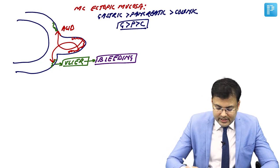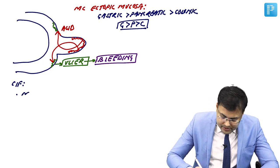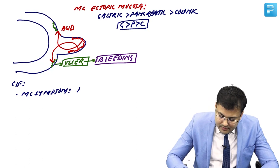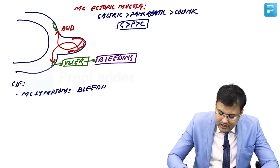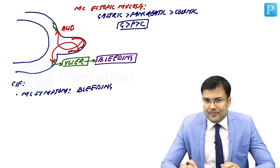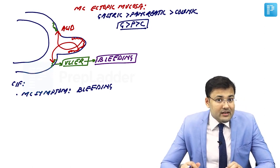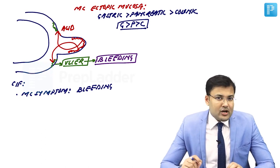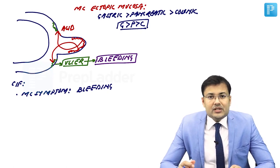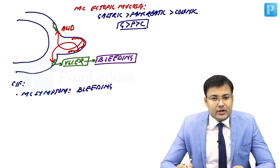So the most common symptom of Meckel's diverticulum is bleeding. In a second situation where there is no ectopic gastric mucosa, the patient will not have bleeding. Patients who have ectopic gastric mucosa become symptomatic during childhood and present with bleeding when less than two years of age.